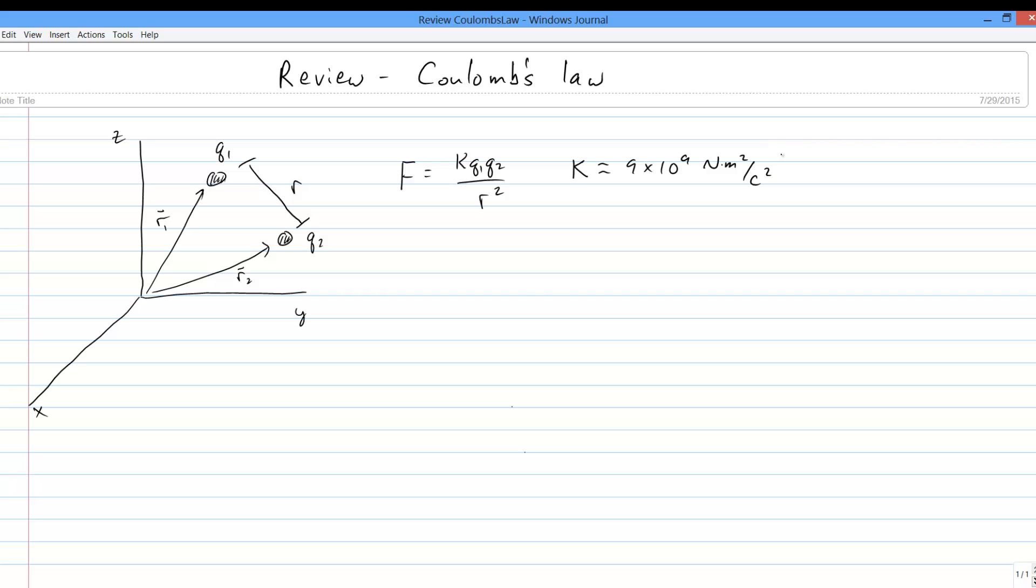K can also be expressed in terms of a different constant, epsilon 0, through the relation shown. Whether you see the one or the other depends on what context you're working in.